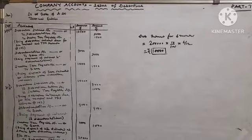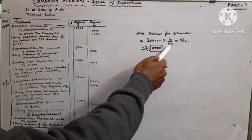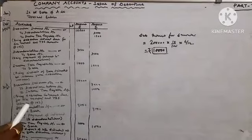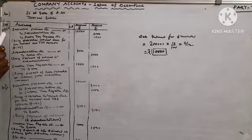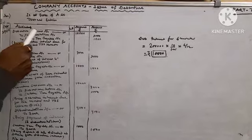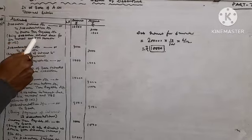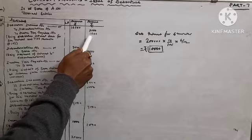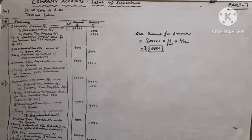First, we calculate debenture interest for 6 months on Rs. 2,00,000 at 10% for 6/12 months, which equals Rs. 10,000. Now, the debenture interest due accounting entry on 30th September 2019: Debenture Interest Account Debit Rs. 10,000; to Debenture Holder Account Rs. 9,000; to Income Tax Payable Account Rs. 1,000 — TDS at 10% on Rs. 10,000 equals Rs. 1,000; net to debenture holder is Rs. 9,000.